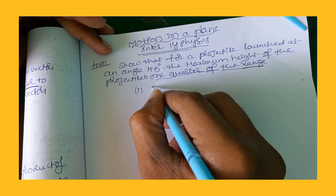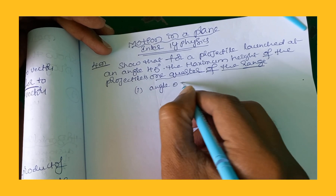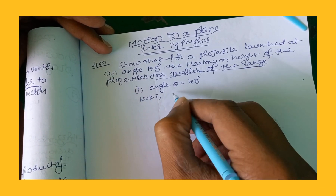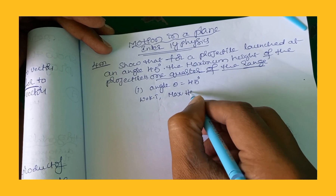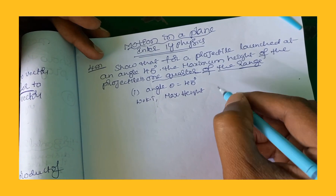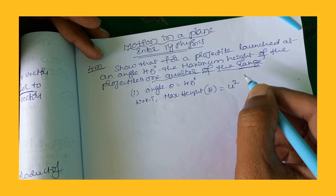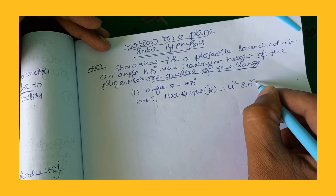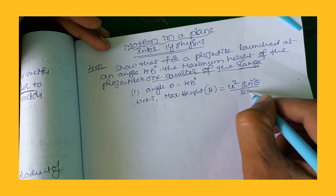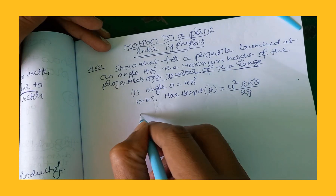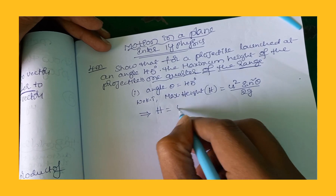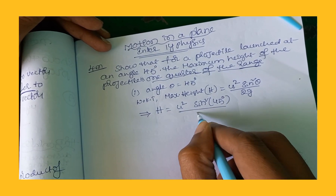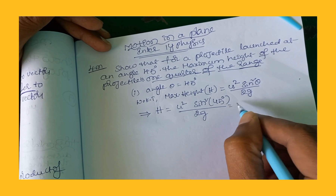For this case, the given angle theta is 45 degrees. We know that the maximum height reached by the projectile H is equal to u squared sine squared theta divided by 2g. So this implies H equals u squared sine squared 45 degrees divided by 2g.